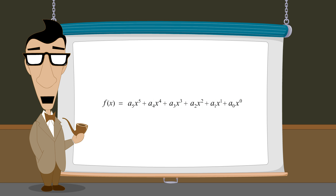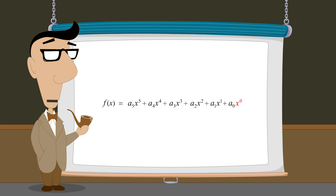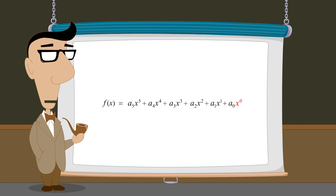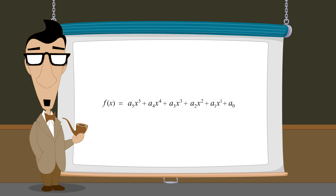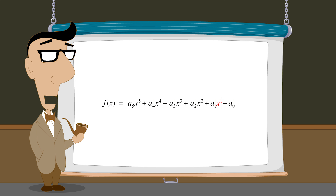As we saw in previous lectures, when writing monomials it is not necessary to write x to the zero power, since in algebra any variable with an exponent of zero by convention is considered to have a value of one. Likewise, x to the first power is typically written without an exponent, since variables with no exponent have an implied exponent of one.